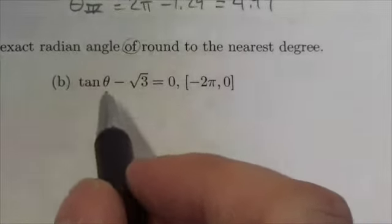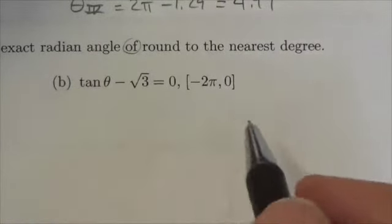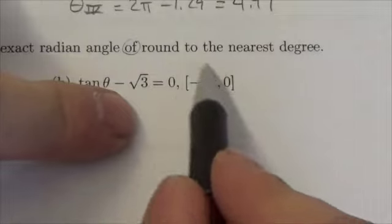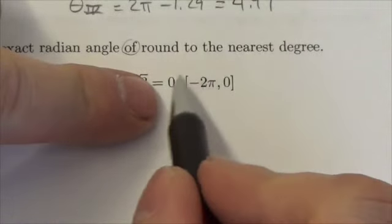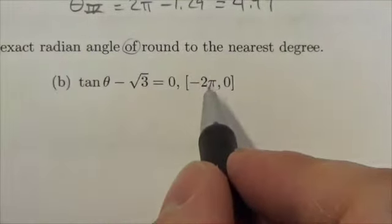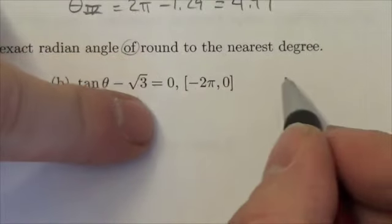Hi everyone. This question asks us to solve tan θ - √3 = 0 on the domain [-2π, 0]. This is a closed interval between negative 2π and 0.